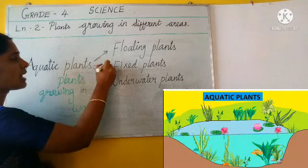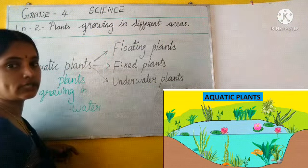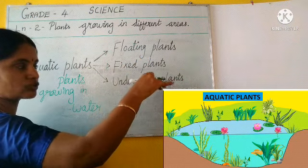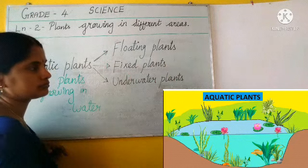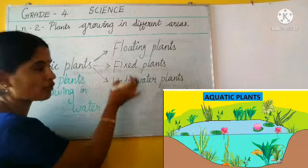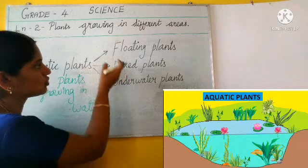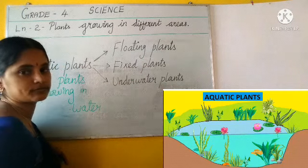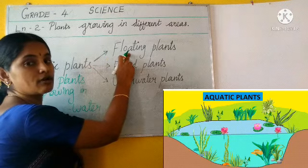In aquatic plants we can see three different kinds of plants. Some plants are floating on water. Some plants are fixed in the soil but are in water. And some plants are submerged underwater. So now we are going to see one by one about these plants, starting with floating plants.